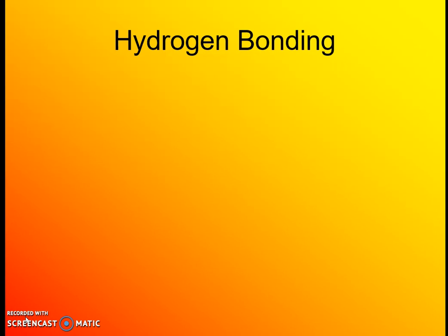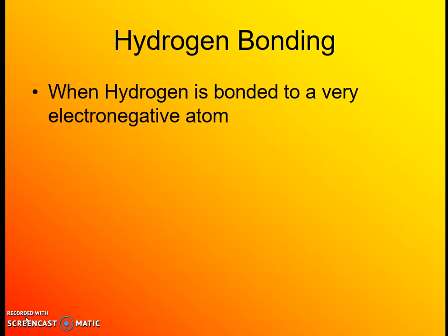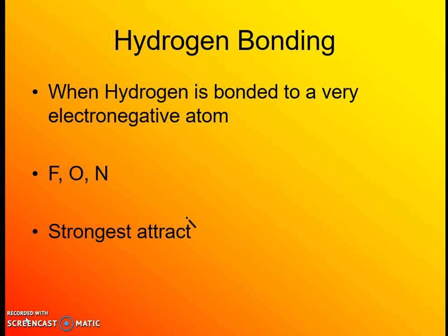The strongest of the intermolecular attractions is hydrogen bonding. Hydrogen bonding occurs when hydrogen is bonded to oxygen, nitrogen, or fluorine — because those atoms are so much more electronegative than hydrogen, which has the weakest electronegativity among nonmetals. This results in a very polar bond, much stronger than phosphorus-chlorine attractions, because the electrons are held so much more toward fluorine, oxygen, or nitrogen compared to hydrogen, creating a very strong attraction between those molecules.